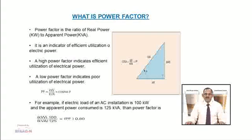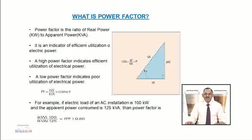For example, if the electric load of an AC installation is 100 kW and the apparent power consumed is 125 kVA, then power factor = kW / kVA = 100 / 125 = 0.80. From the power triangle we can see that kW is the actual or working power, kVA is the apparent power, kVAR is the reactive power, and power factor cos φ = kW / kVA.